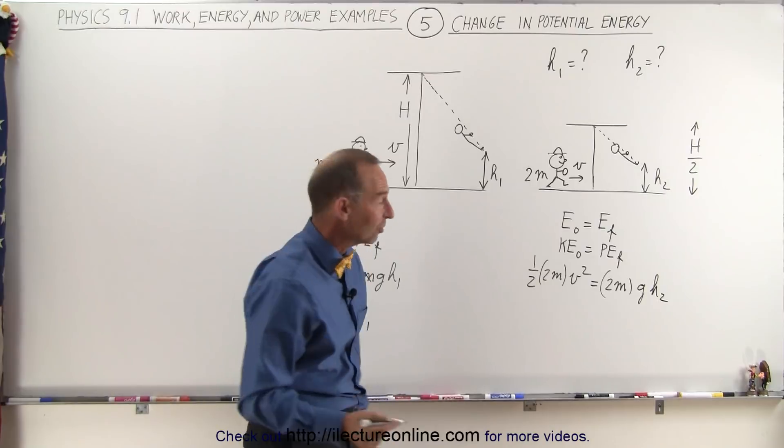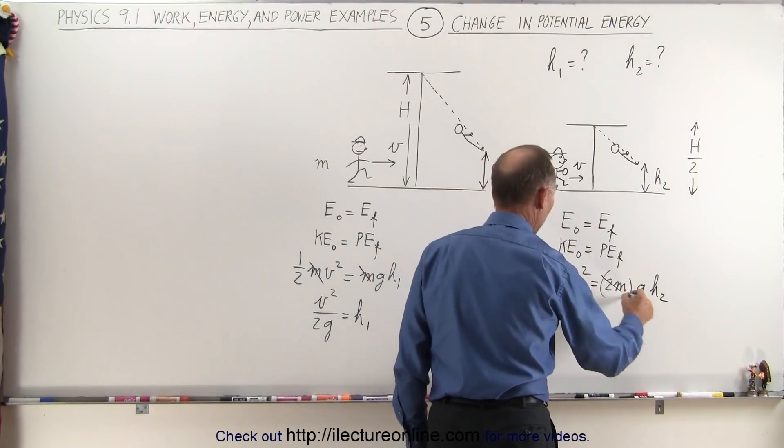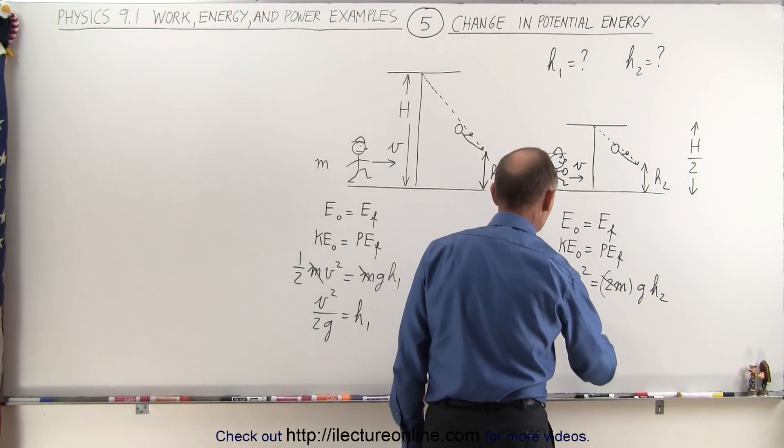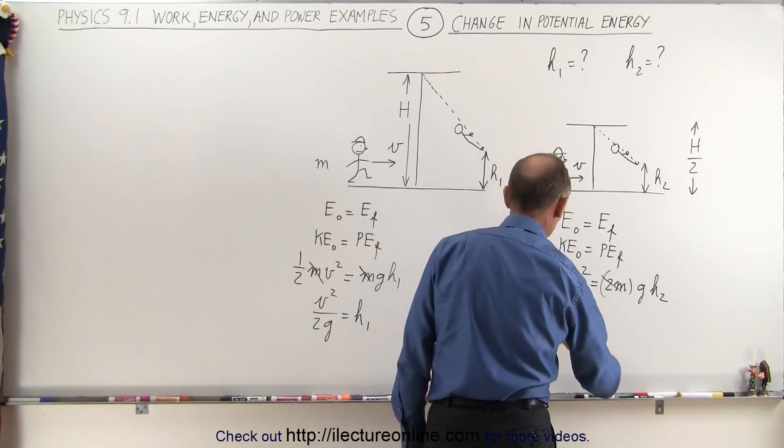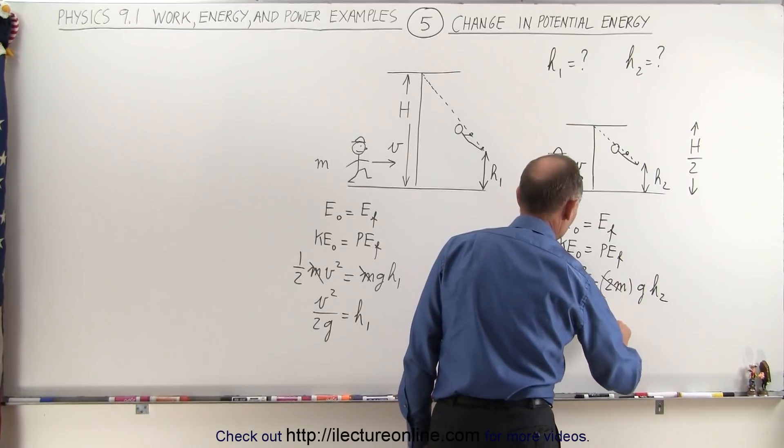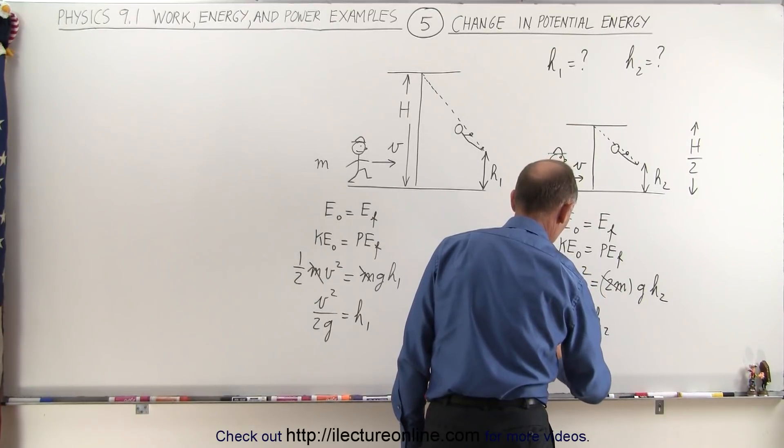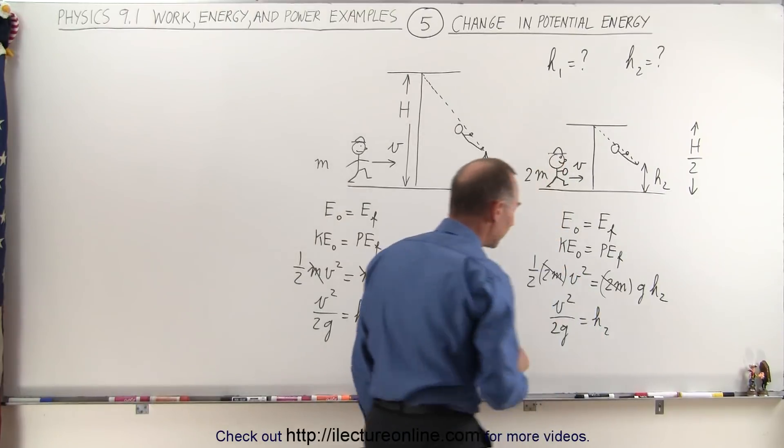Notice we have a 2m on both sides so that cancels out. When we solve for h2 we can say that v squared over 2g is equal to h2.